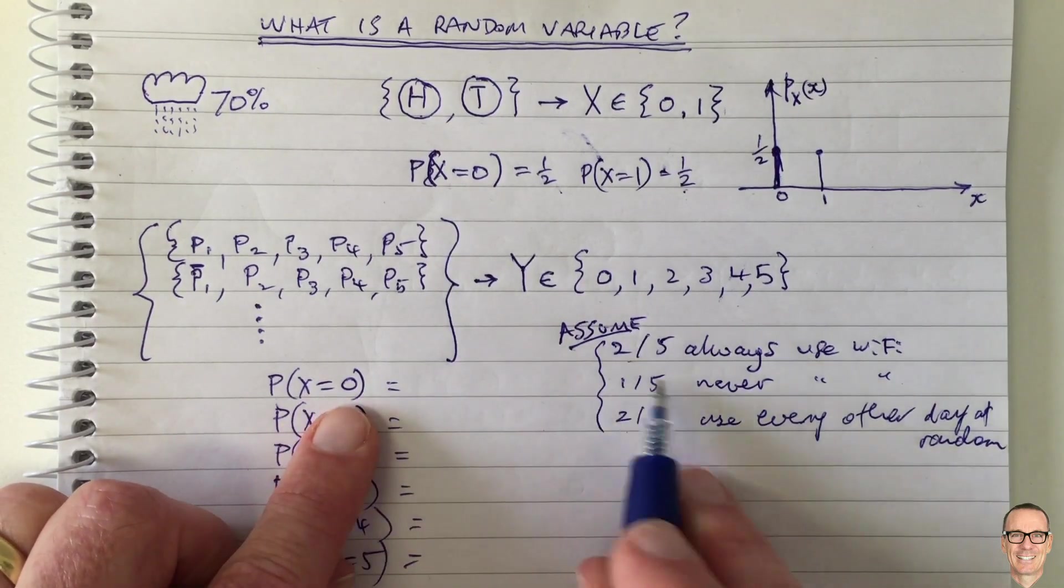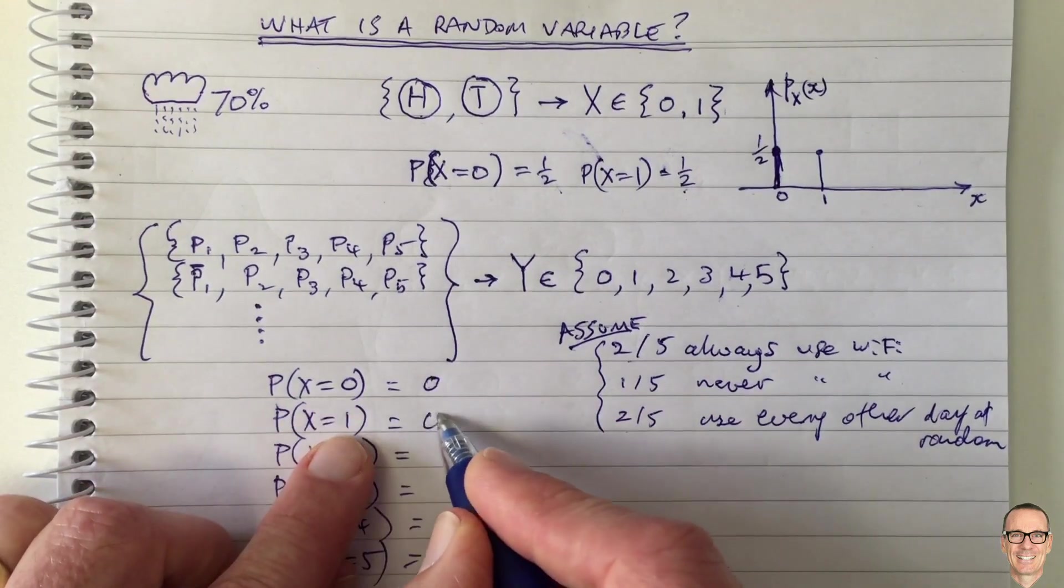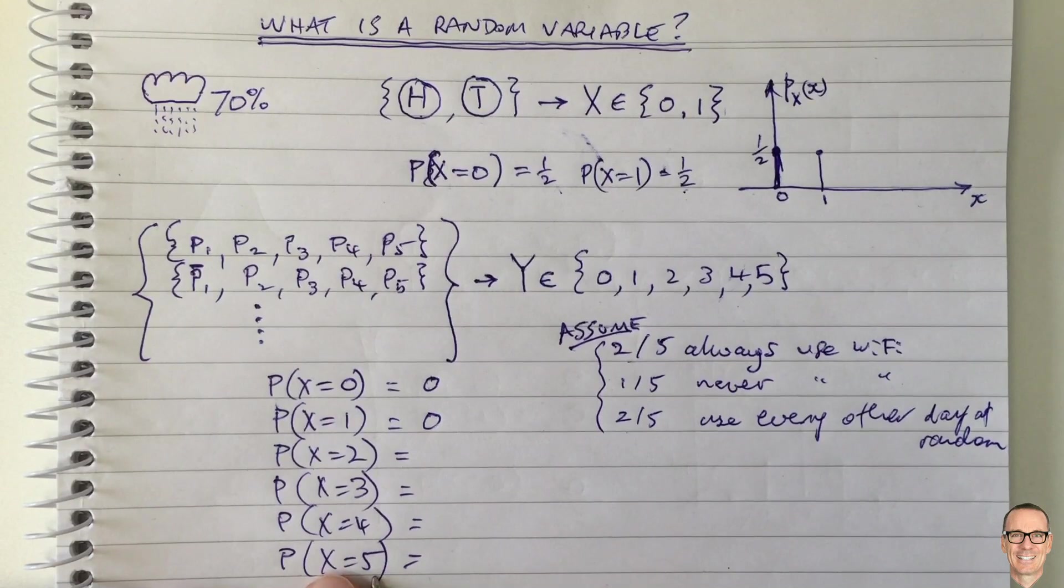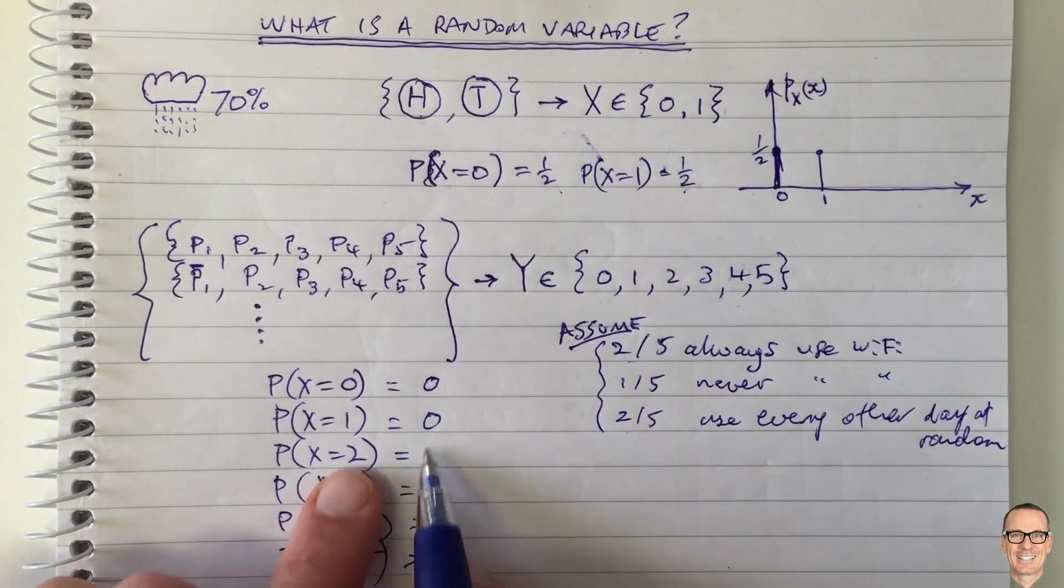Well, in this case, there's no chance. If two out of five are always using it, then there's no chance you've got zero or one. There's also no chance you'll have five people if one out of five never uses it, and then you've got the probabilities in between here.